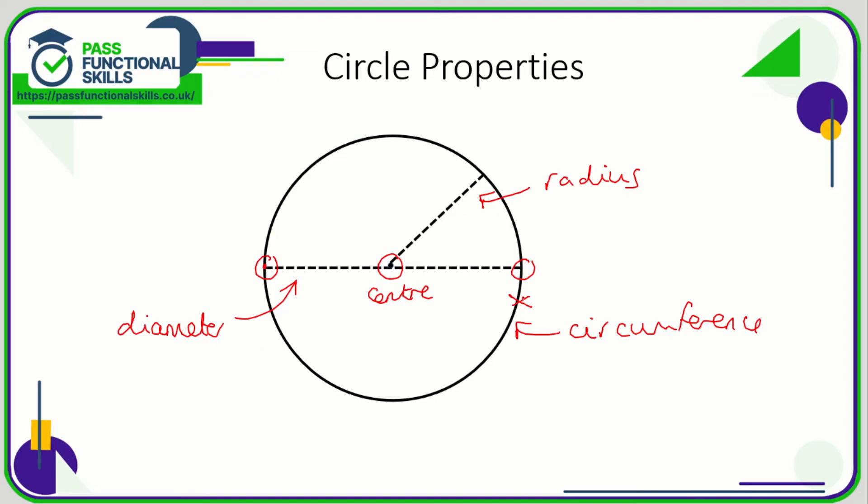So four terms: the center, the circumference—the distance all the way around the outside, the perimeter if you like—radius being a line from the center to the circumference, and a diameter, a straight line from one side of the circumference to the other that passes through the center.